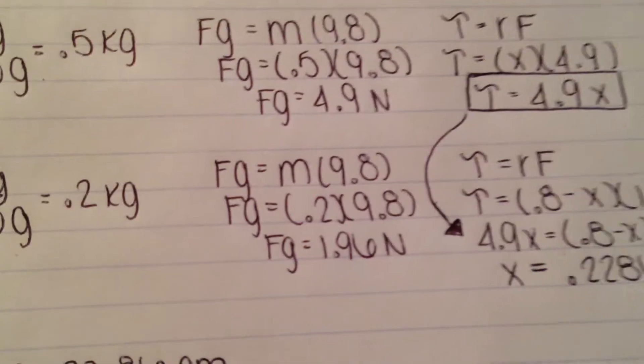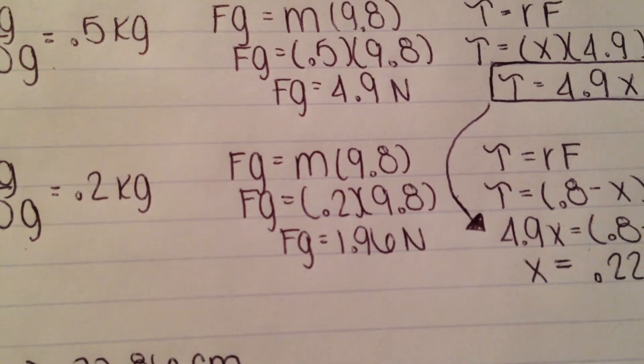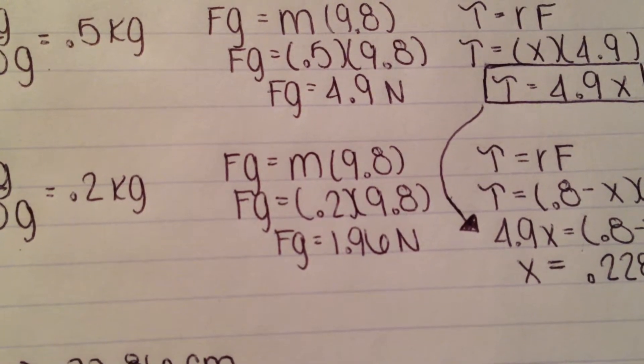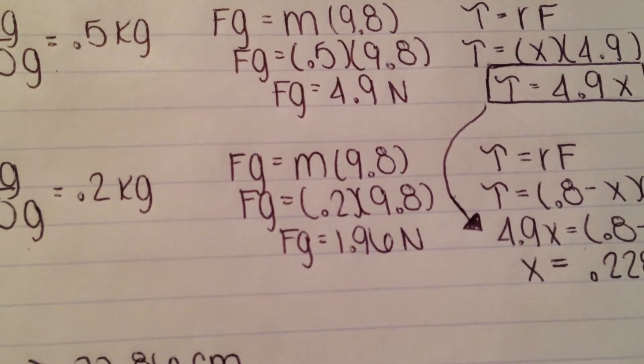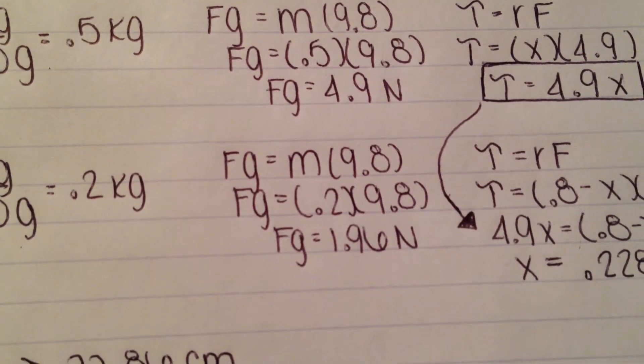Then, you find the force gravity by using the formula force gravity equals mass times 9.8. Your mass is 0.2 kilograms multiplied by 9.8, which will come out to be 1.96 newtons.